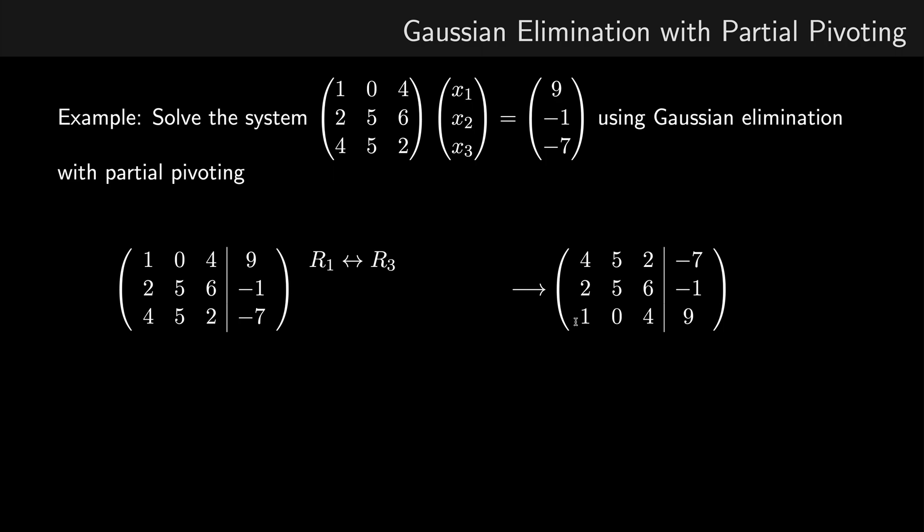So I found those ratios by simply dividing the element you want to reduce by the pivot element. If you're using partial pivoting, this number here should always be less than or equal to 1. So if we perform that row operation, we've reduced the elements beneath our pivot to 0.